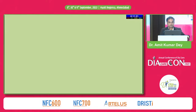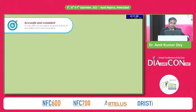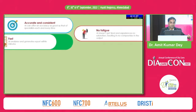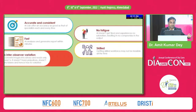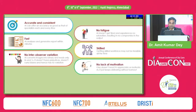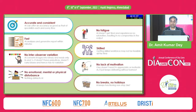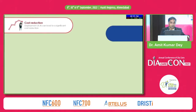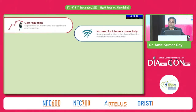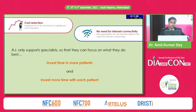Why artificial intelligence? The reasons are plenty: it's accurate and consistent, there is no fatigue, it's fast and skilled, no inter-observer variation, no lack of motivation, no emotional, mental or physical disturbances, no breaks, no holidays. It reduces cost, and there is even the possibility of AI functioning without internet connectivity. In medicine, AI will support specialists so they can focus on what they do best — investing more time with each patient. That is very, very important.